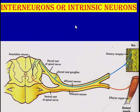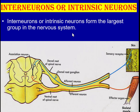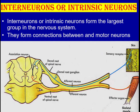Interneurons, also called intrinsic neurons, form the largest group in the nervous system. They are called interneurons because they lie between the afferent or sensory neurons and the motor or efferent neurons. They form communication between motor neurons and sensory neurons.